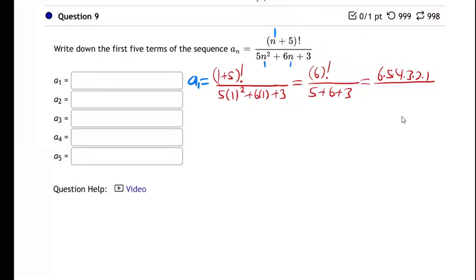...is 5, plus 6 times 1 is 6, plus 3. So what is that? That is 6 times 5 times 4 times 3 times 2 times 1. You know what that means - that factorial means multiply from 6 all the way down to 1. The bottom is 14, so hit the buttons on your calculator. I'm getting 720 over 14. I don't think that's clean, no it's not clean. You could get a decimal.